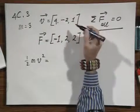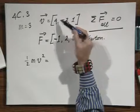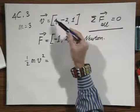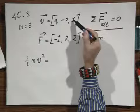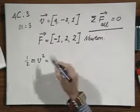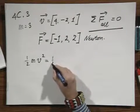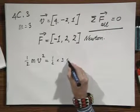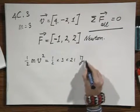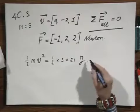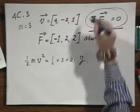And since the velocity is the square root of the sum of the squares, 16 plus 4 plus 1, that is 21. So v squared must be 21. So I get 1 half times 3 times 21 joules. And it's never changing because the sum of all forces are zero.